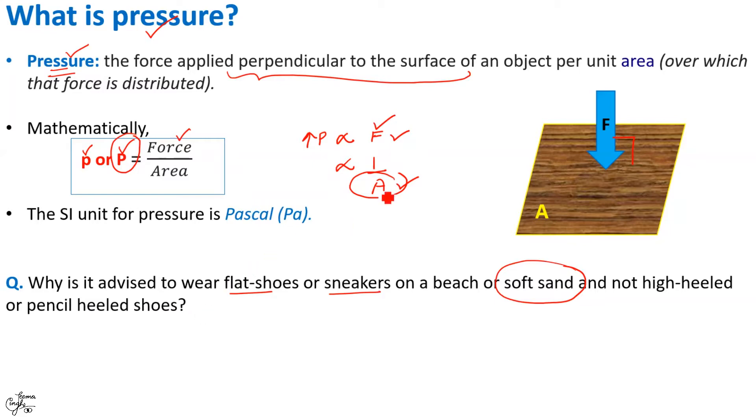We just learned that pressure is equal to force by area, which implies pressure is directly proportional to force and inversely proportional to area. Now, as the area of cross-section is more for flat shoes as compared to heels, the pressure applied is less, better is the weight distribution, thus making it easier for us to walk on sand in flat shoes without sinking, which makes us feel more comfortable. So, the answer is here.